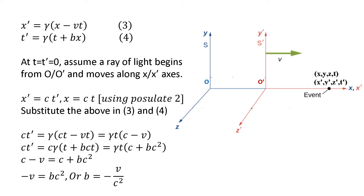When T and T prime are 0, assume a ray of light begins from the common origin O or O prime and moves along the X or X prime axis. In frame S prime, X prime equals C·T prime, and in frame S, X equals C·T. Using postulate 2, the speed of light is the same, C, in both frames. Substituting into the equations, from equation 3 we get C·T prime equals gamma·(C·T minus V·T) = gamma·T·(C minus V), and from equation 4 we get C·T prime equals gamma·T·(C + B·C²). Equating these gives C minus V equals C + B·C², so minus V equals B·C², giving B equals minus V by C square.